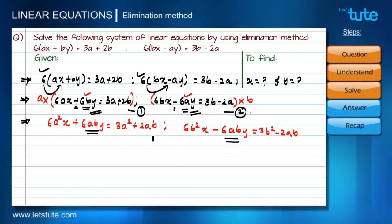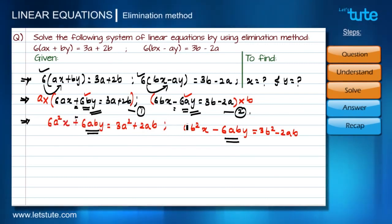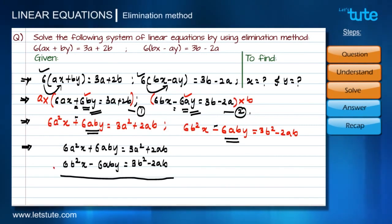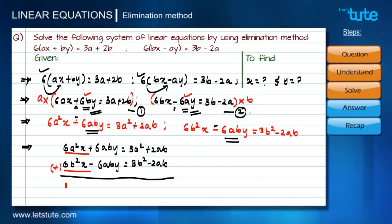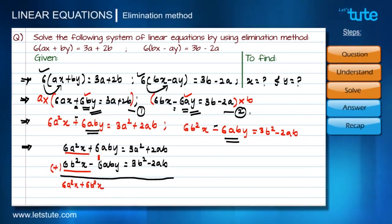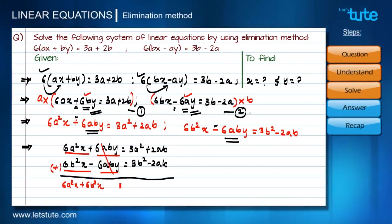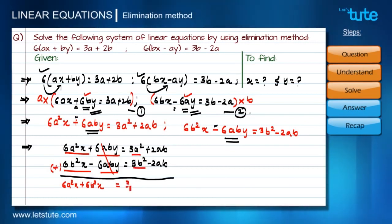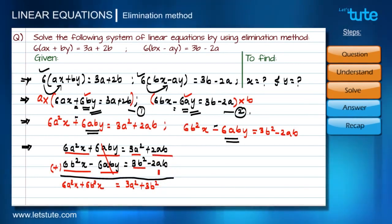Now the coefficients of y are equal, so we can add the two equations to eliminate the y terms since they have opposite signs. Adding gives: six·a²x plus six·b²x on the left — the y terms cancel. On the right, three·a² plus three·b² remains — the other terms also cancel with opposite signs.